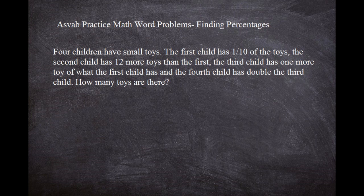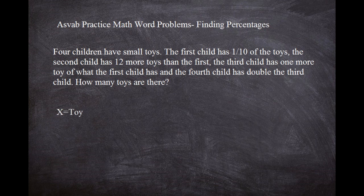So let's think about what we heard. We know one has double the amount of the other, one has 12 more than the other, one has only one tenth, and the third child has one more than the first. That 12 tells us we're not dealing with small numbers like two — somebody's got a pretty good amount of toys. It's asking us how many toys are there total. So what we're going to do is set up a variable for the total amount of toys — we'll call it X. X is going to represent the total amount of toys.